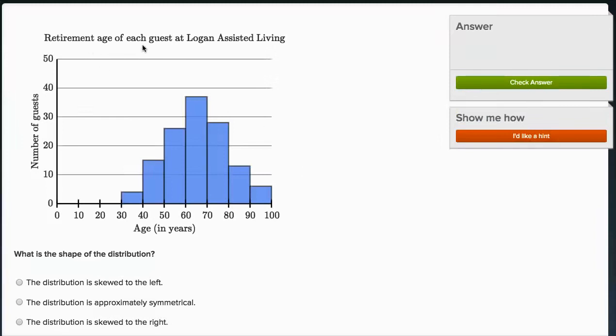Retirement age of each guest at Logan-assisted living. They're telling us the number of guests by age. So we have a lot of guests that are between 60 and 70 years old, a reasonable number that are between 50 and 60, or 70 or 80. And this distribution actually looks pretty symmetrical.